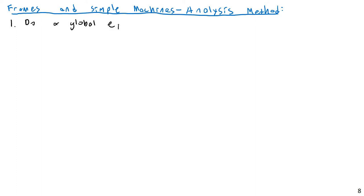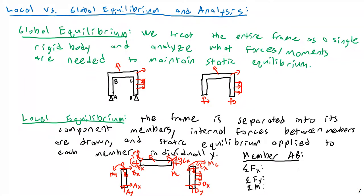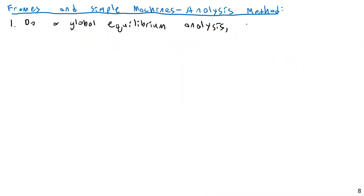A global equilibrium analysis means treating the entire frame as a single rigid body. What you're doing here is treating the entire frame as a single rigid body, and the goal of that is to solve for as many of your external reaction forces as possible.